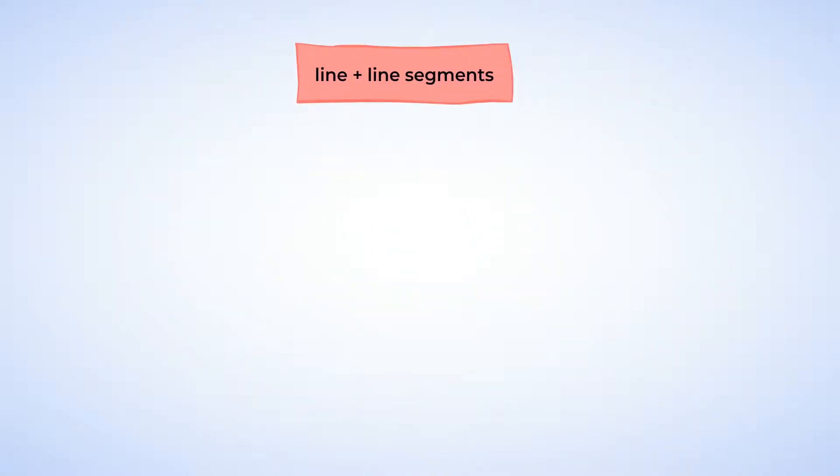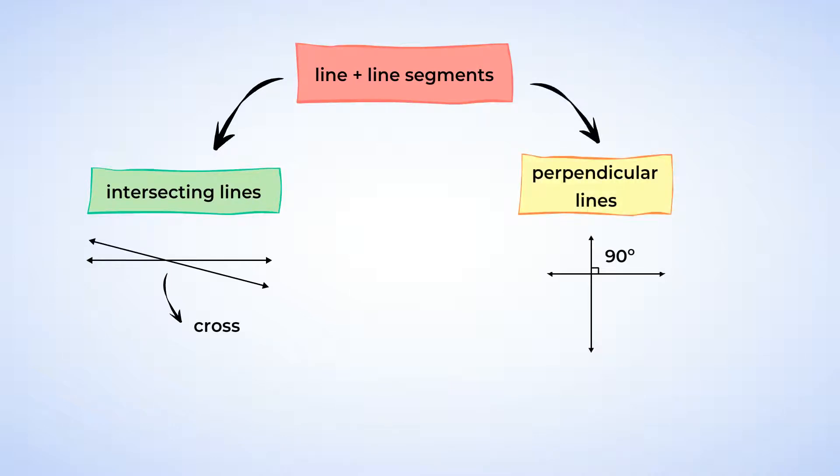Now lines and line segments can have special relationships. Two lines or line segments that cross each other are called intersecting lines. When lines intersect and create a right angle, an angle of 90 degrees, they're called perpendicular. And when two lines never intersect, no matter how far the lines extend, those are called parallel lines. When perpendicular lines and parallel lines are combined, they can create some fun shapes, like rectangles.